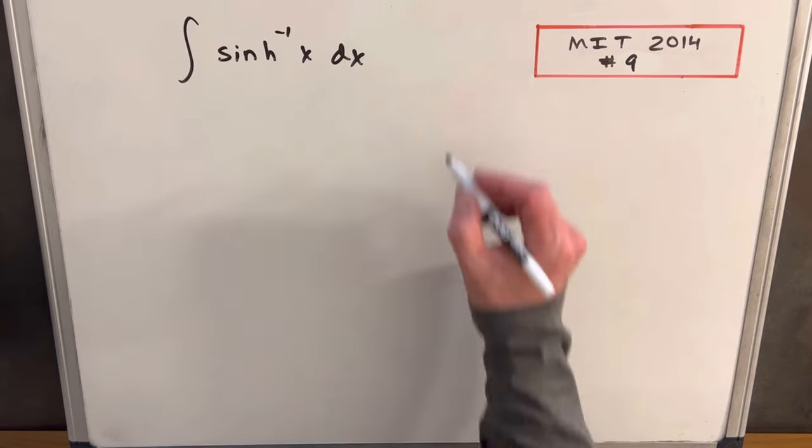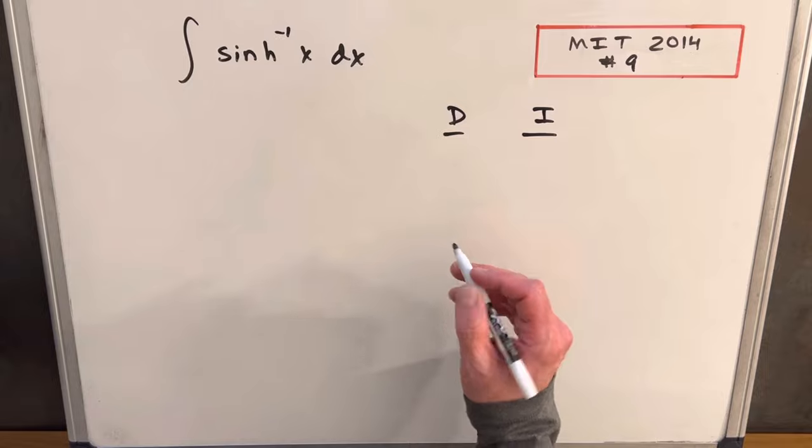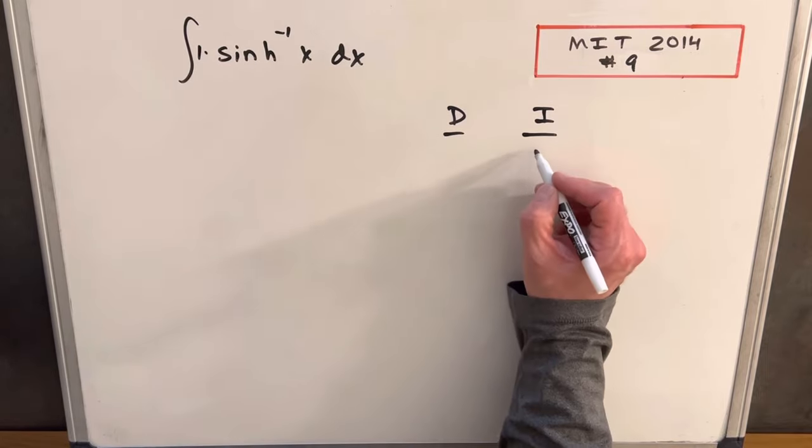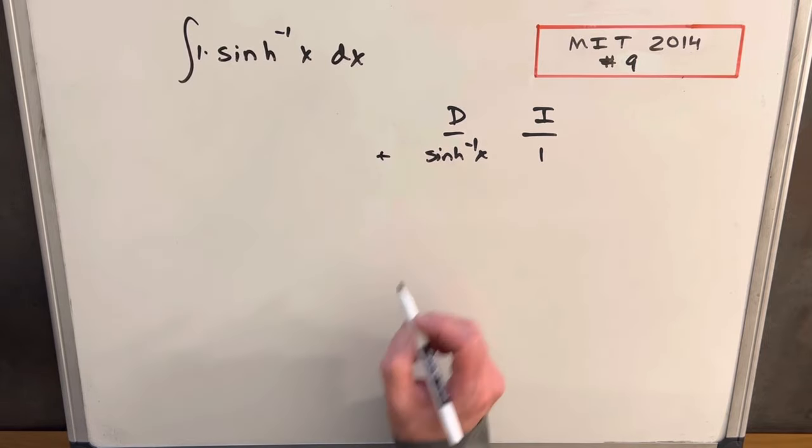So what I'll do is integration by parts. We're going to use the DI method, tabular integration. We only have one function here, so we'll kind of create a function. We'll create a one to integrate and we'll differentiate our sinh inverse, and then we'll need a plus minus plus.